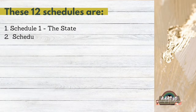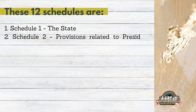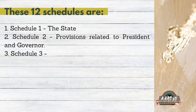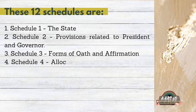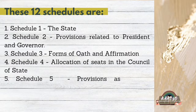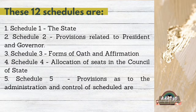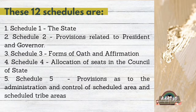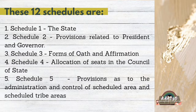These 12 schedules are: Schedule 1 — The States; Schedule 2 — Provisions related to the President and Governor; Schedule 3 — Forms of Oath and Affirmation; Schedule 4 — Allocation of Seats in the Council of States; Schedule 5 — Provisions as to the Administration and Control of Scheduled Areas and Scheduled Tribes Areas.